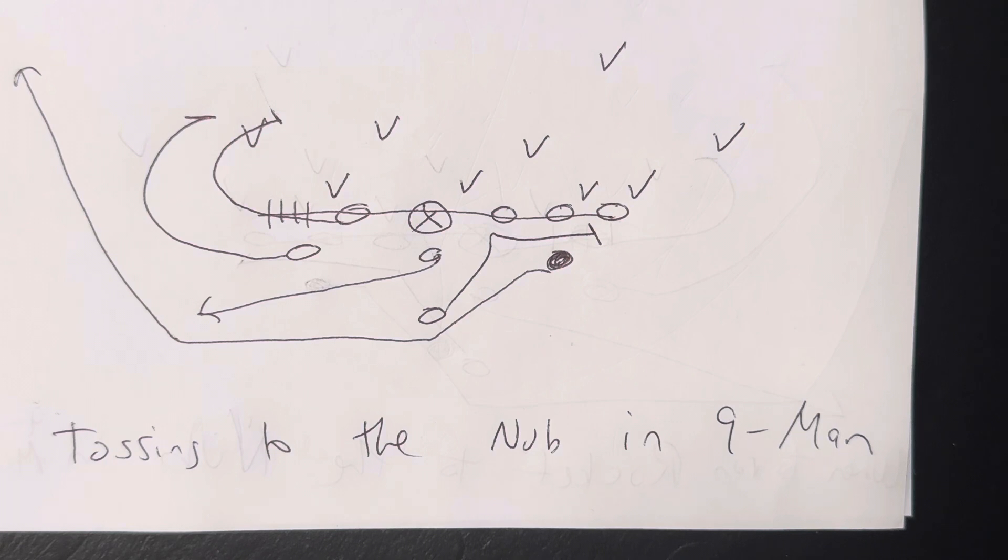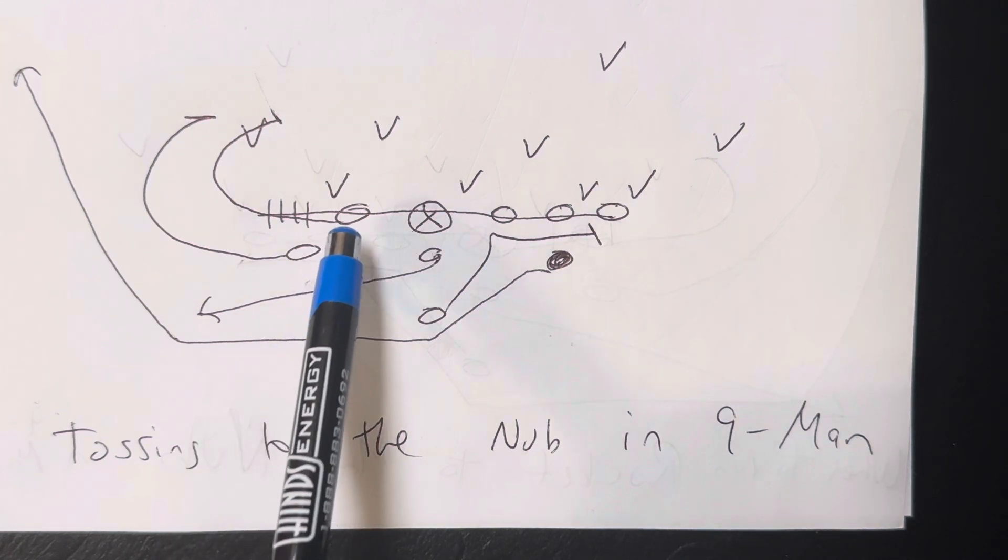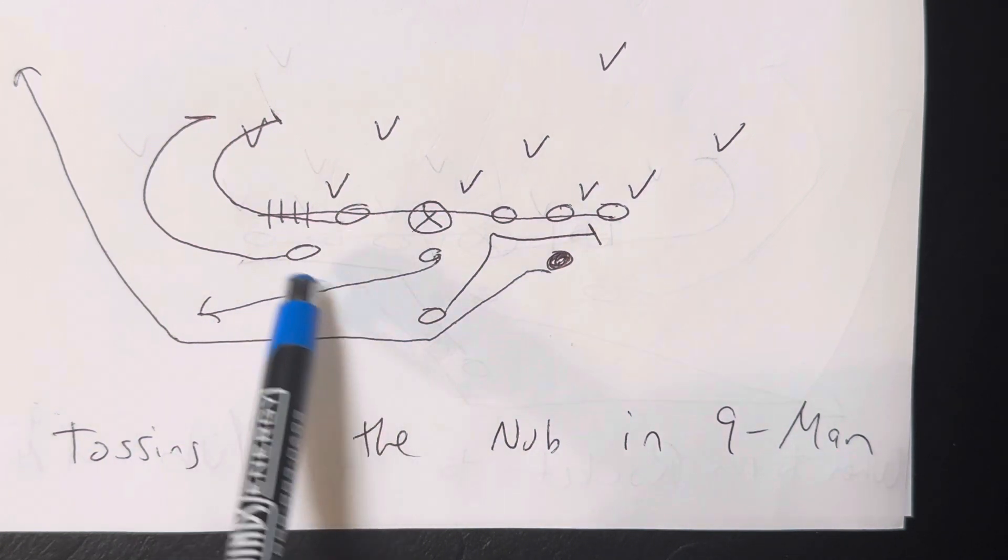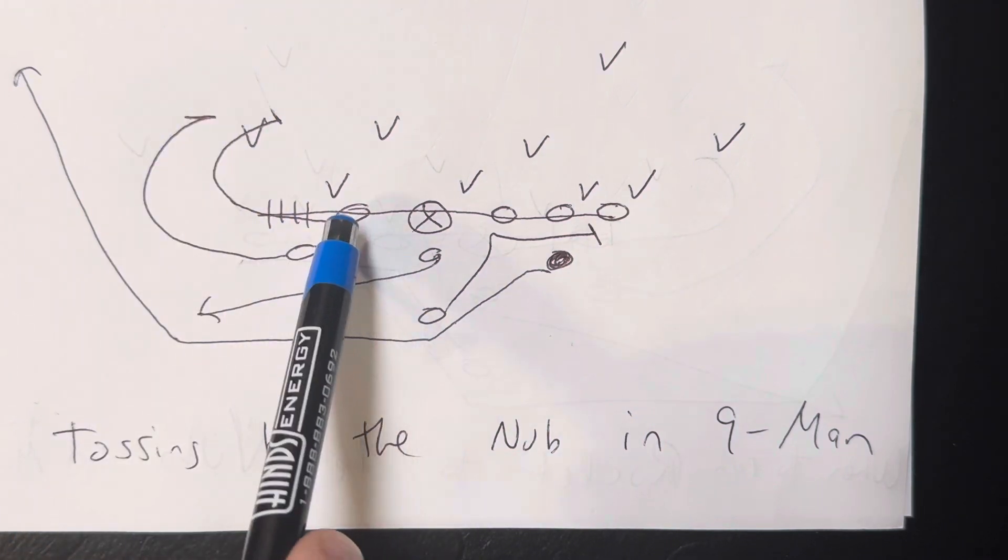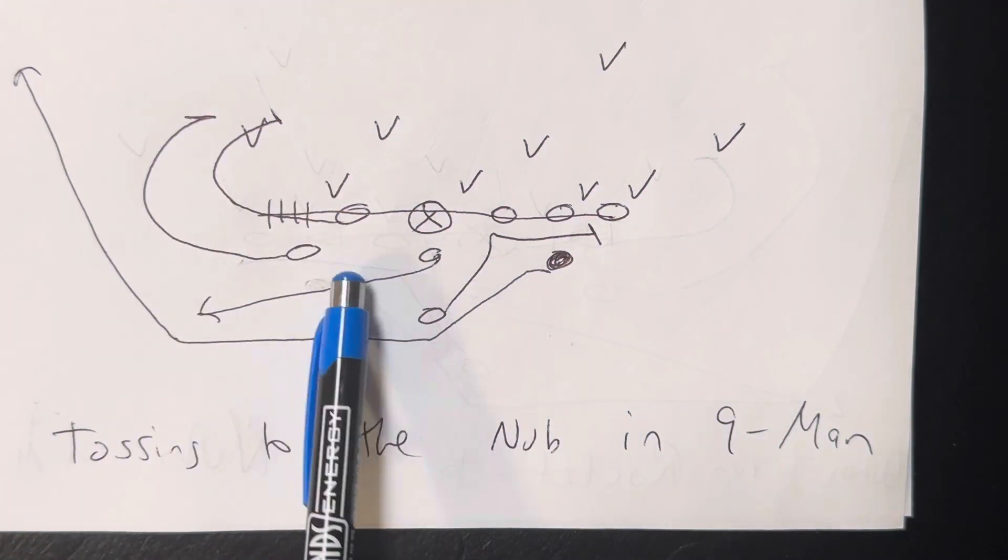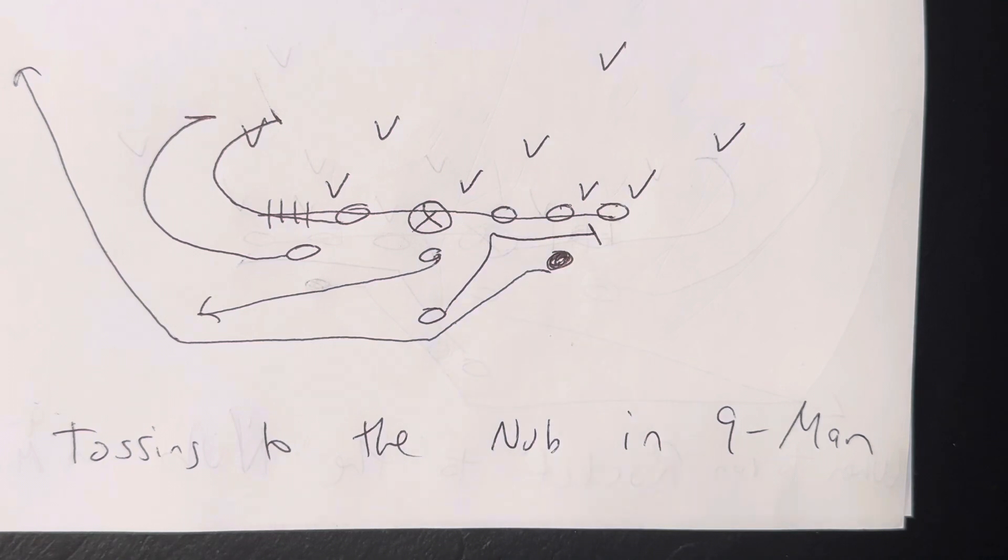So that's tossing to the nub in nine-man football. By the way, if I said guard, that's the end. So the A back is going to block the first guy. The end is going to block the second guy. You want this to be the end so that he's eligible, so they have to cover him. And that's that. So that's tossing to the nub in nine-man football.